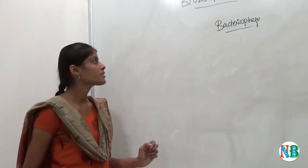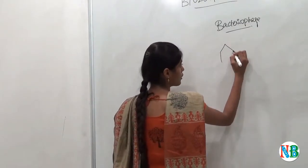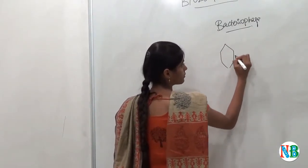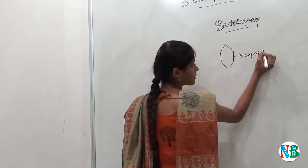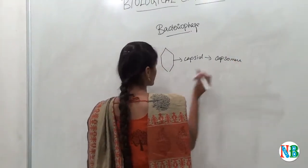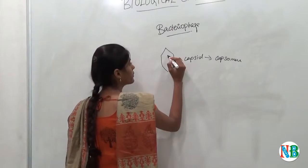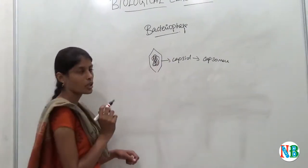Now we will see about bacteriophages. Bacteriophage consists of a protein coat called capsid and it is made up of capsomeres. This coat protects the nucleic acid, that is either DNA or RNA.